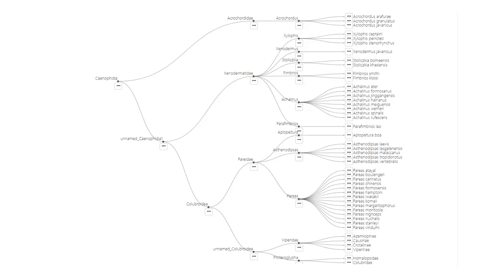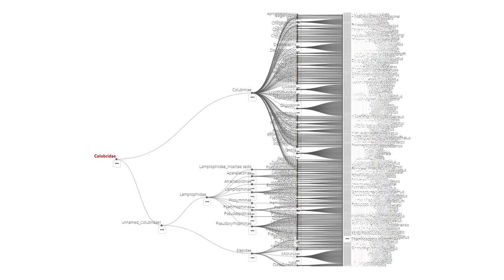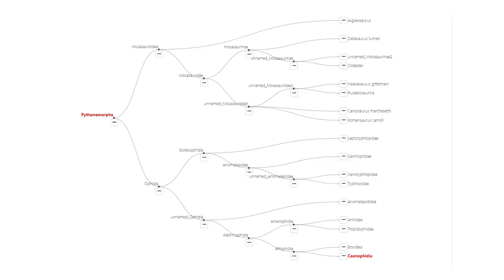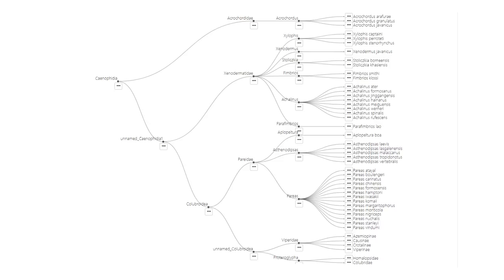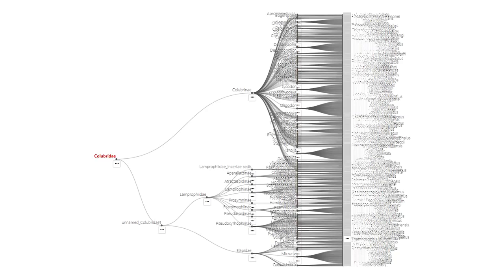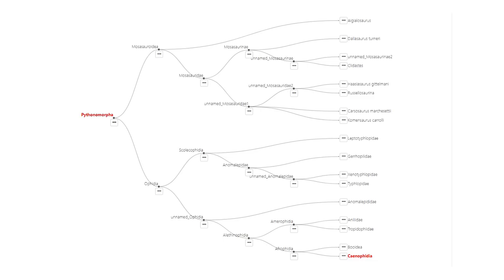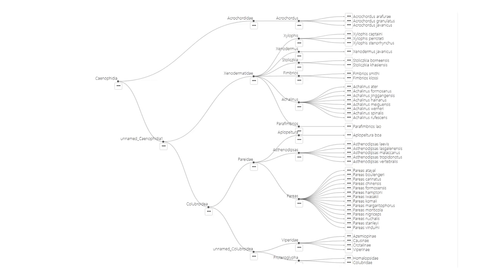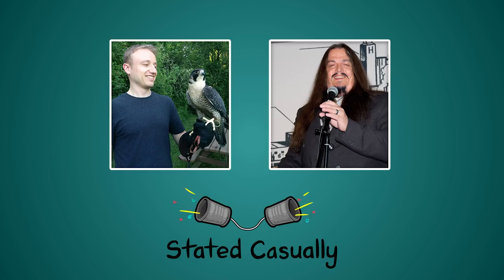It acts as a giant, searchable evolutionary tree. On launch, the tree will have over 50,000 organisms in it, which you can explore by clicking around, and that number is just going to increase as time goes on. They're going to be constantly adding more organisms. This is going to be an absolutely incredible tool — really useful for anyone interested in phylogeny, interested in exploring relationships of different plants and animals. I am extremely excited for this to come out.